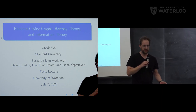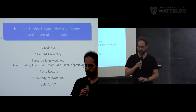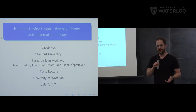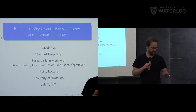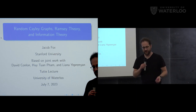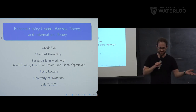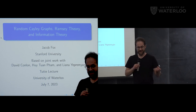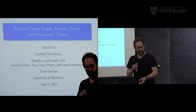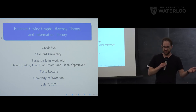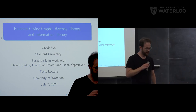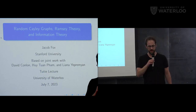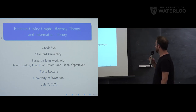Jacob works in discrete math, but it's honestly hard to narrow it down much more than that because he's an acknowledged expert in so many separate subfields. He works in Ramsey theory, graph theory, geometric combinatorics, analytic combinatorics, extremal theory, probabilistic methods, algebraic combinatorics, and arithmetic combinatorics. I think we'll see a few of those different topics in this talk today, which is on random Cayley graphs, Ramsey theory, and information theory.